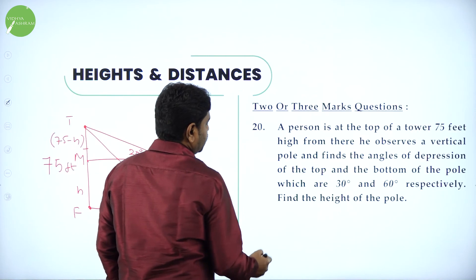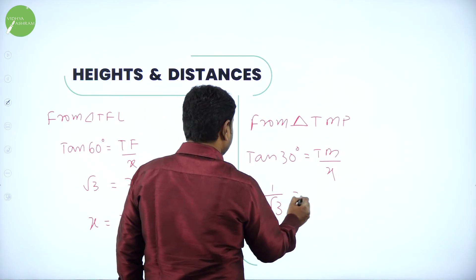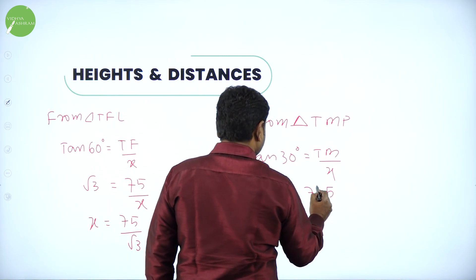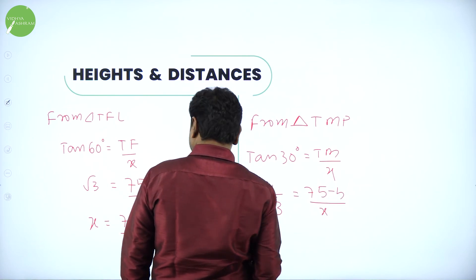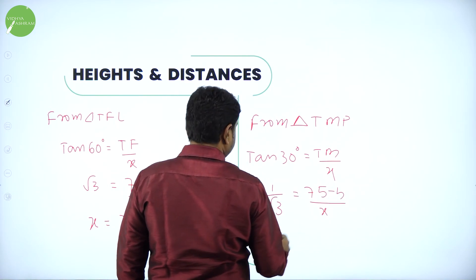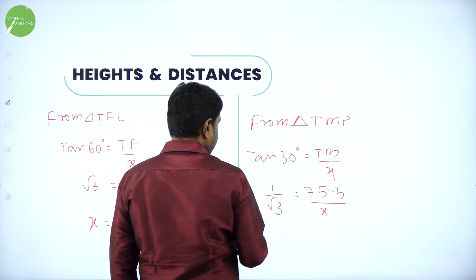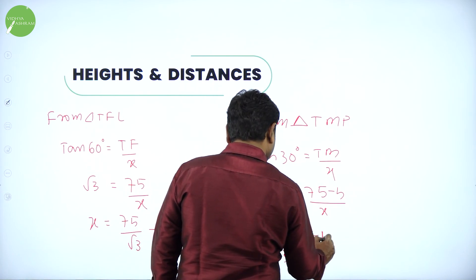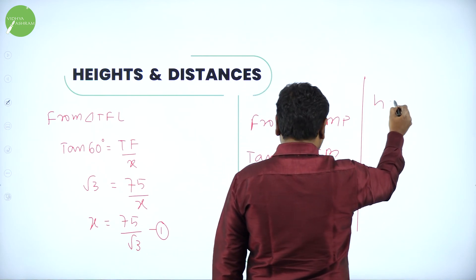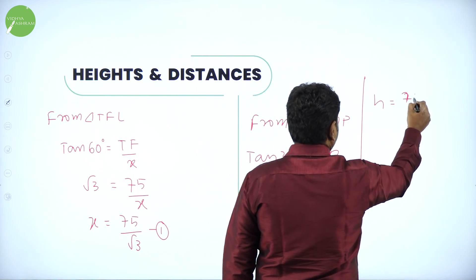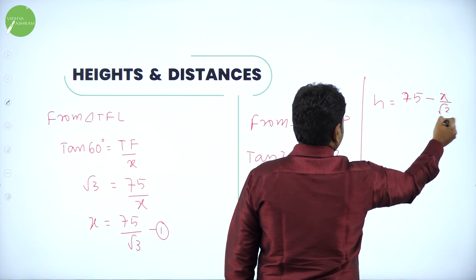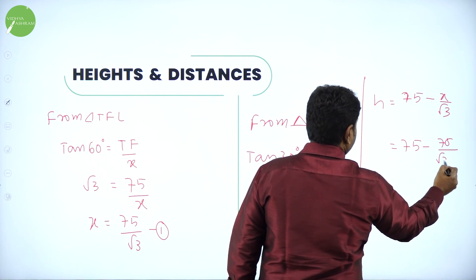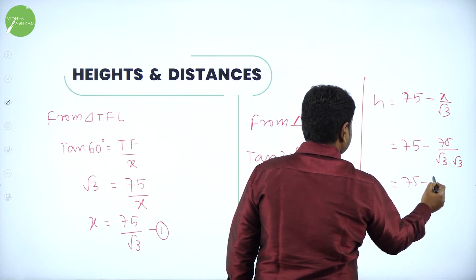From triangle TMP, tan 30 degrees equals TM divided by MP. The adjacent MP equals FL equals x, and TM equals 75 minus H. Tan 30 is 1 over root 3, so 1 over root 3 equals (75 minus H) over x. Rearranging: x over root 3 equals 75 minus H, so H equals 75 minus x over root 3.